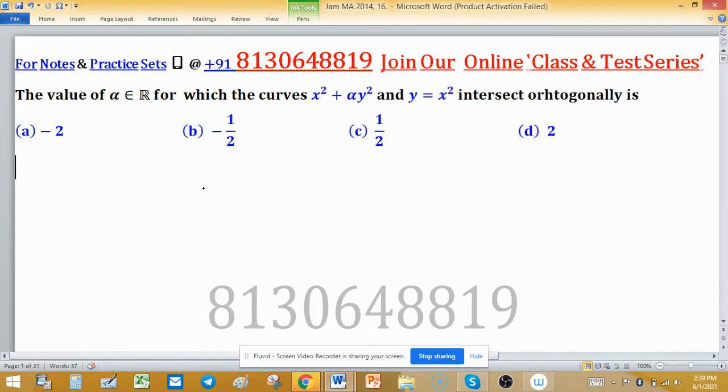Suppose this is the curve x² + αy², this is the representation of this curve. The second curve is y = x², like this. They are intersecting each other.